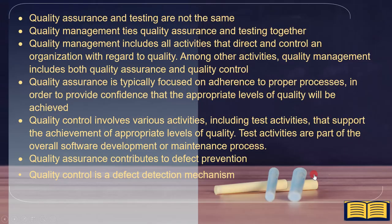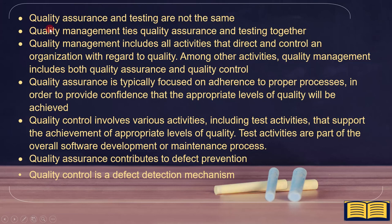To summarize: quality assurance and testing are not the same — quality management ties them together. Quality management includes all activities that direct and control an organization with regard to quality, and it includes both quality assurance and quality control. Quality assurance is focused on adherence to proper processes to provide confidence that appropriate levels of quality will be achieved. Quality control involves various activities, including test activities, that support the achievement of appropriate levels of quality. Test activities are part of the overall software development or maintenance process. Quality assurance contributes to defect prevention, while quality control is a defect detection mechanism.